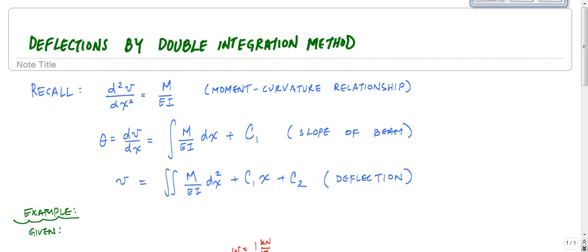And just to recall the double integration method, if you covered this already, it starts from the moment curvature relationship. And so many derivations start from the moment curvature relationship, whether they're buckling, bending, and so on. So many things from the moment curvature relationship. This is the curvature, this d squared v over dx squared is the curvature of our beam, which is related to the moment divided by EI.